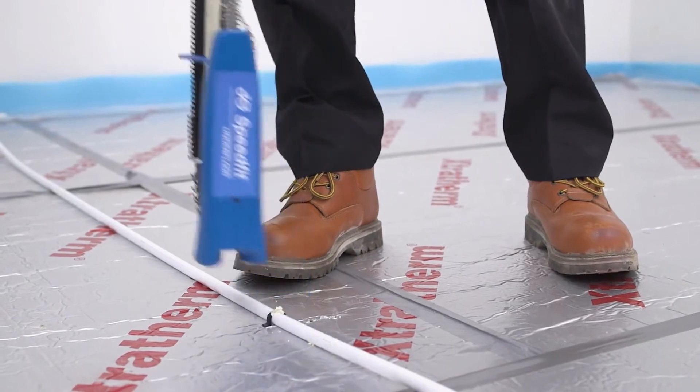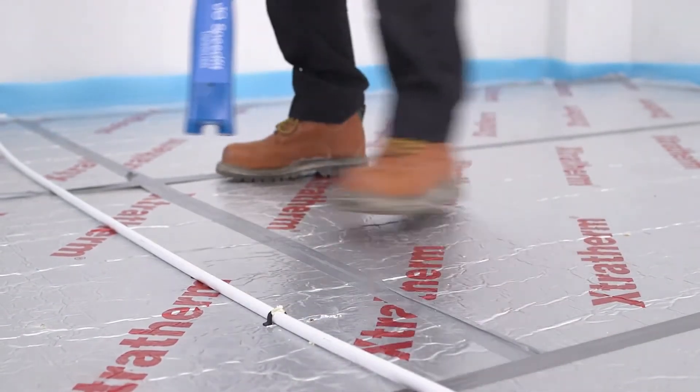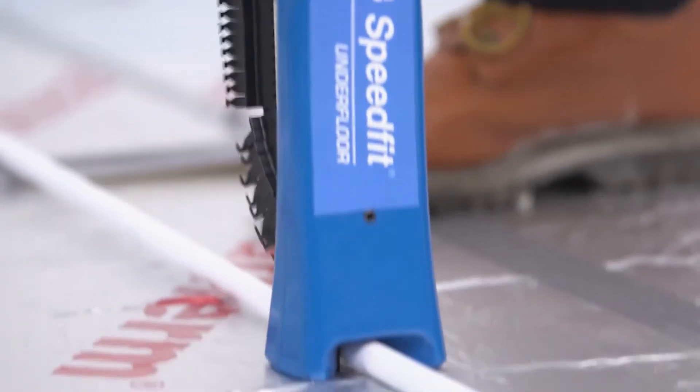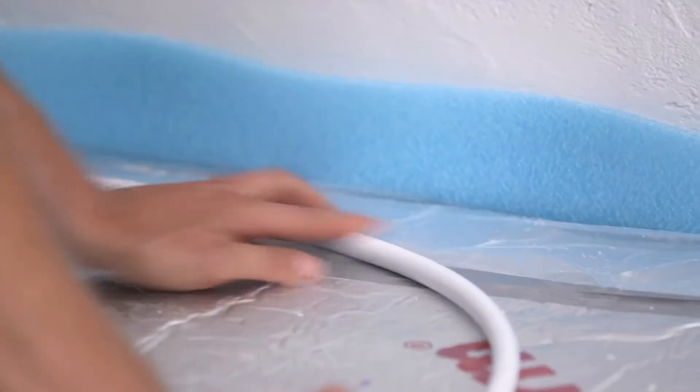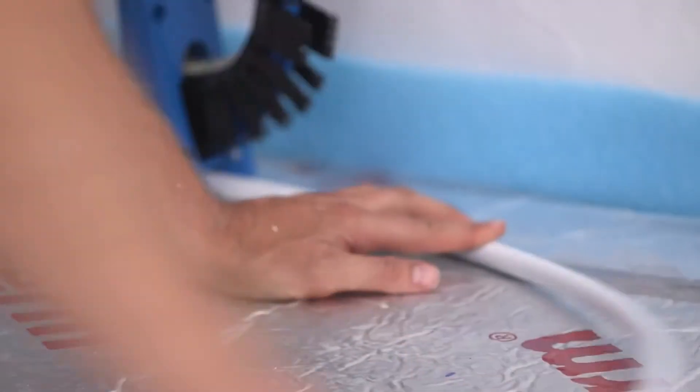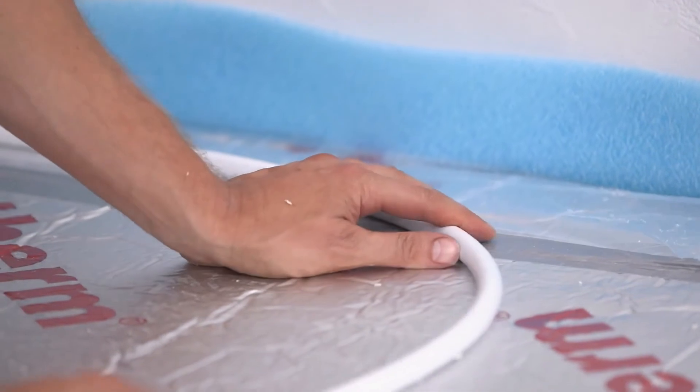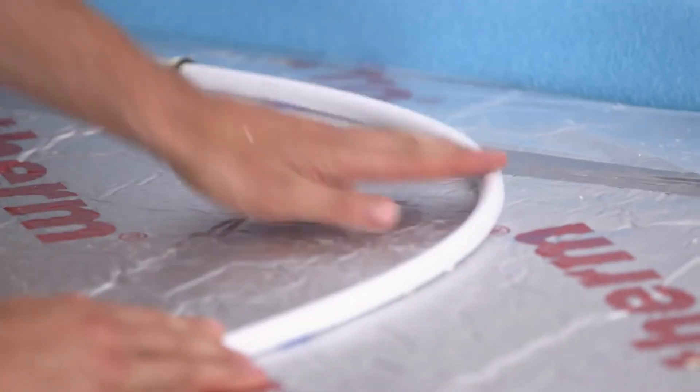Take care to keep the pipe nice and straight for the first length, as the use of a spacer will follow this line. You may need to use more staples on the bends in the circuit, depending on the grip the staples have in the sheet installation.